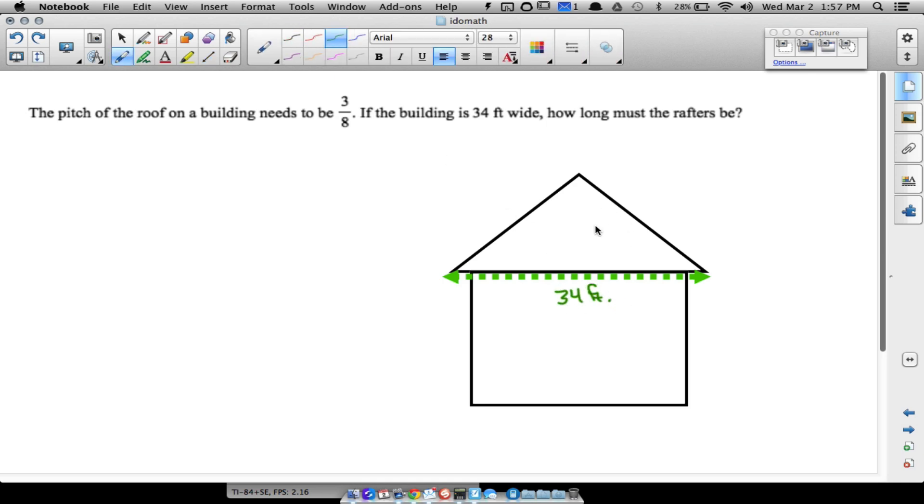We're going to make a few assumptions here. We're going to make the assumption that this is divided right in half, so therefore we're going to have 17 feet over here, 17 feet over here. We don't know how tall the building is and we don't know how long this piece is.